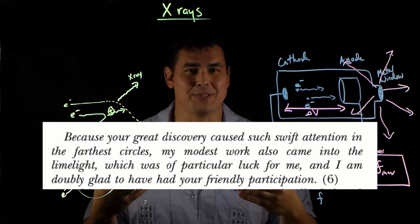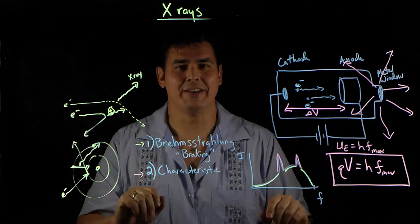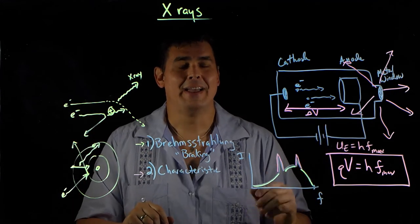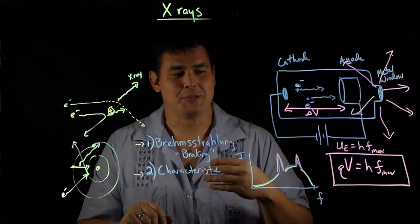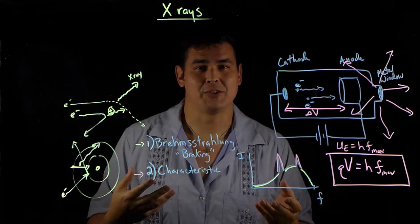And he thought that Röntgen was going to write back and say, oh, yeah, you're so wonderful. I used your tubes, but I built it all on you. And you're the greatest. But Röntgen never did that. And so Lenard started this whole crusade to basically say that he was the one who discovered x-rays instead of Röntgen.